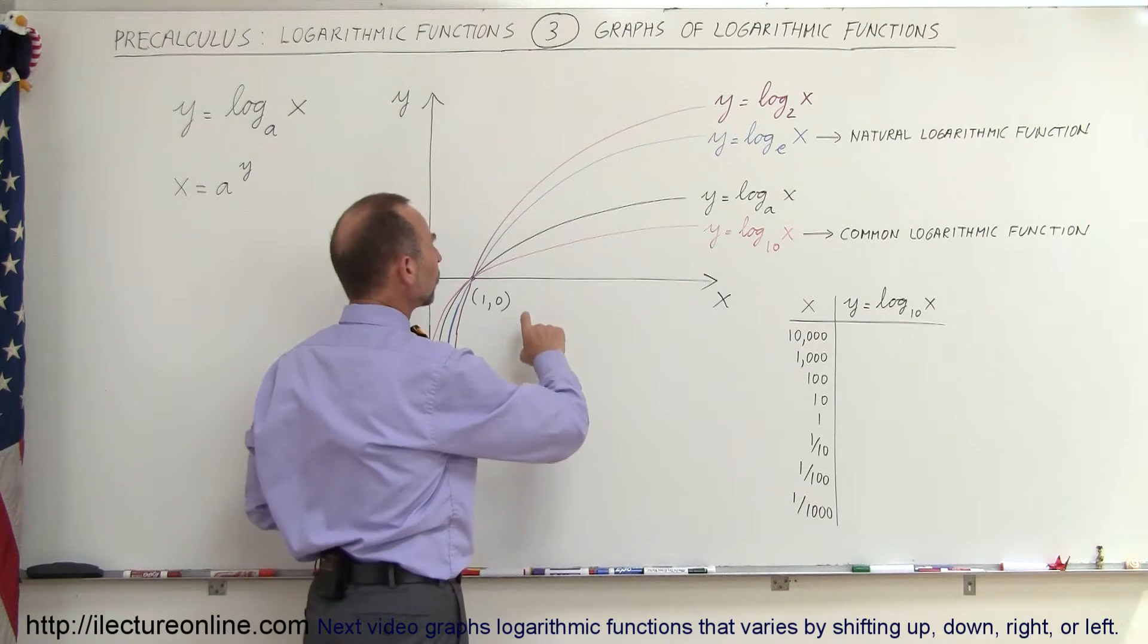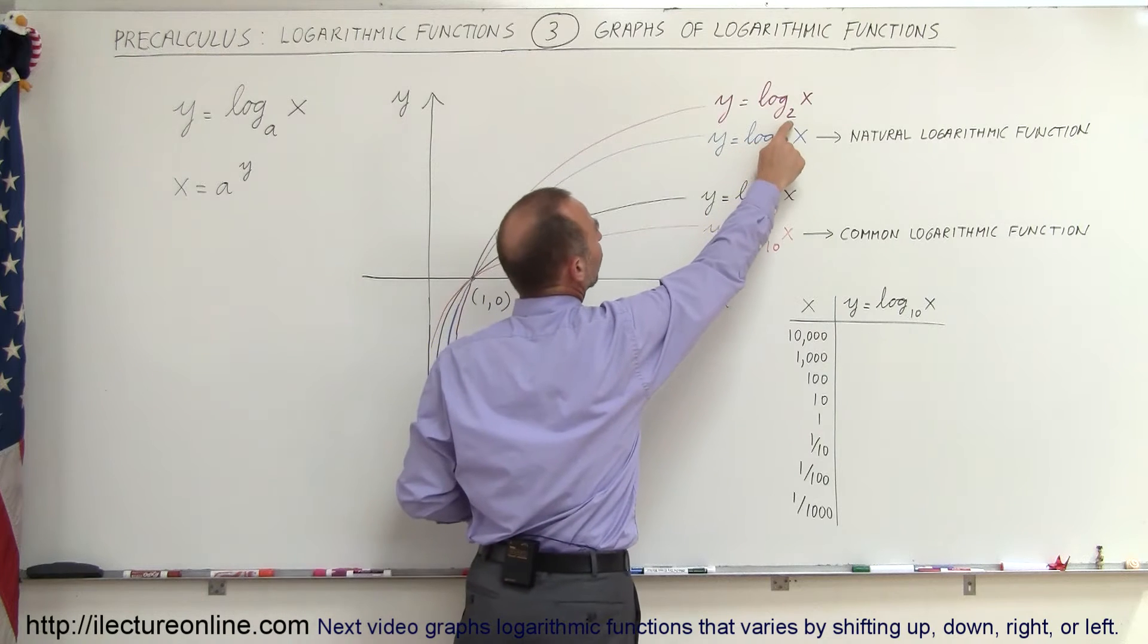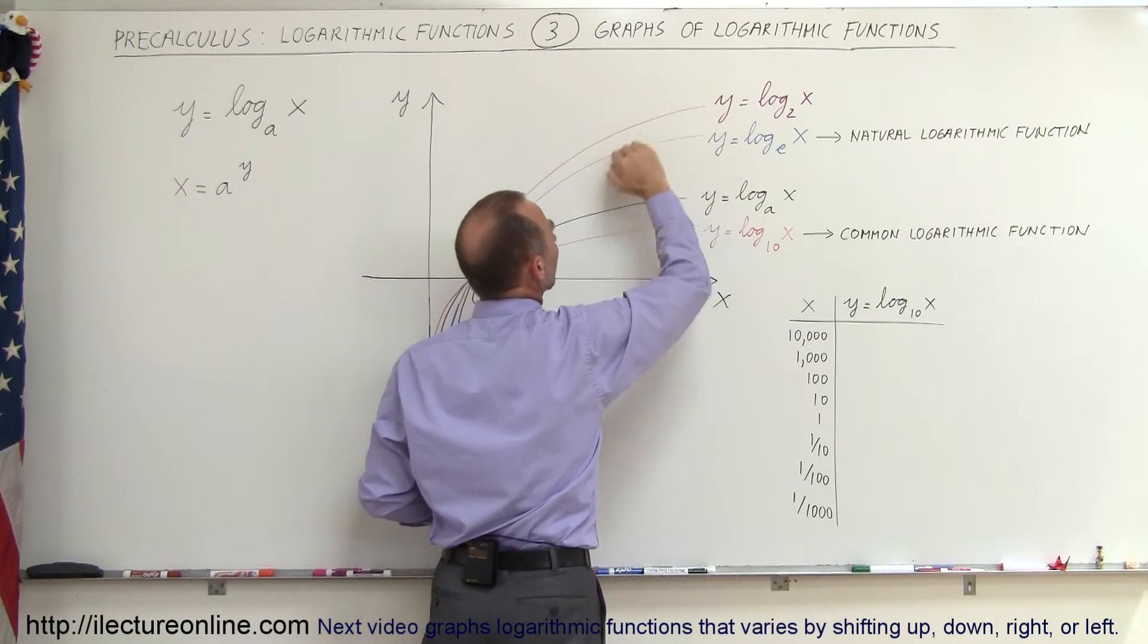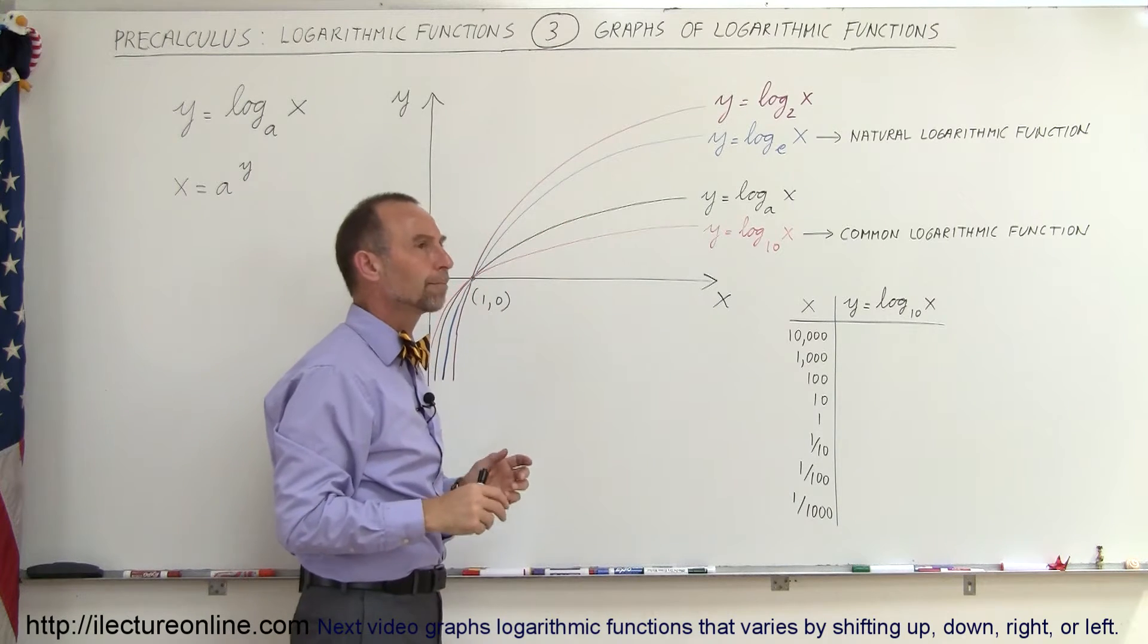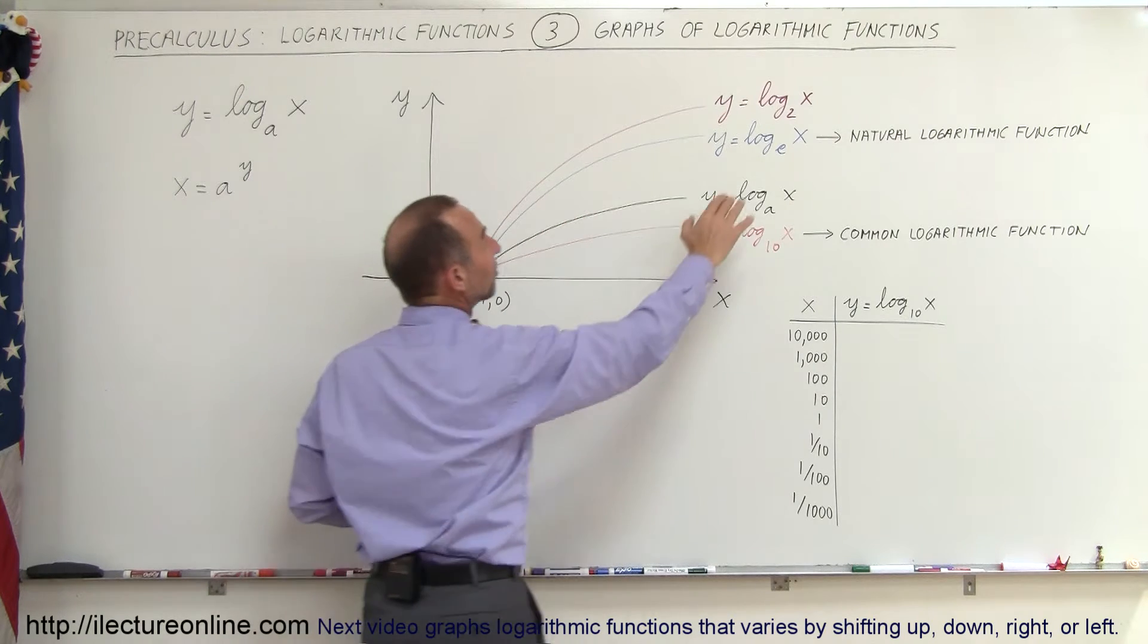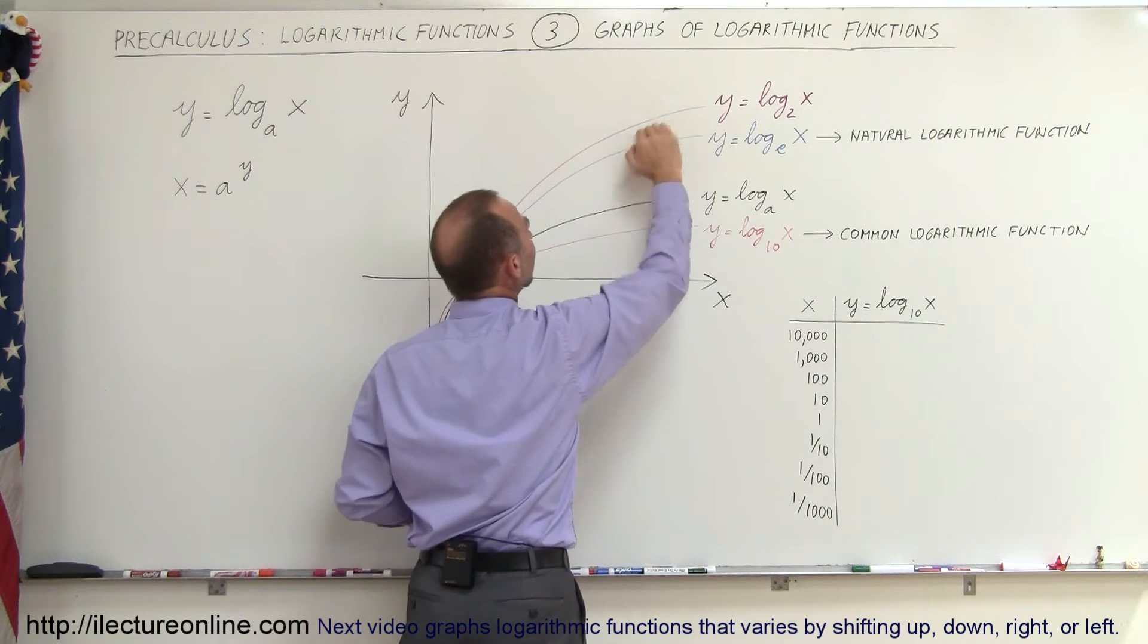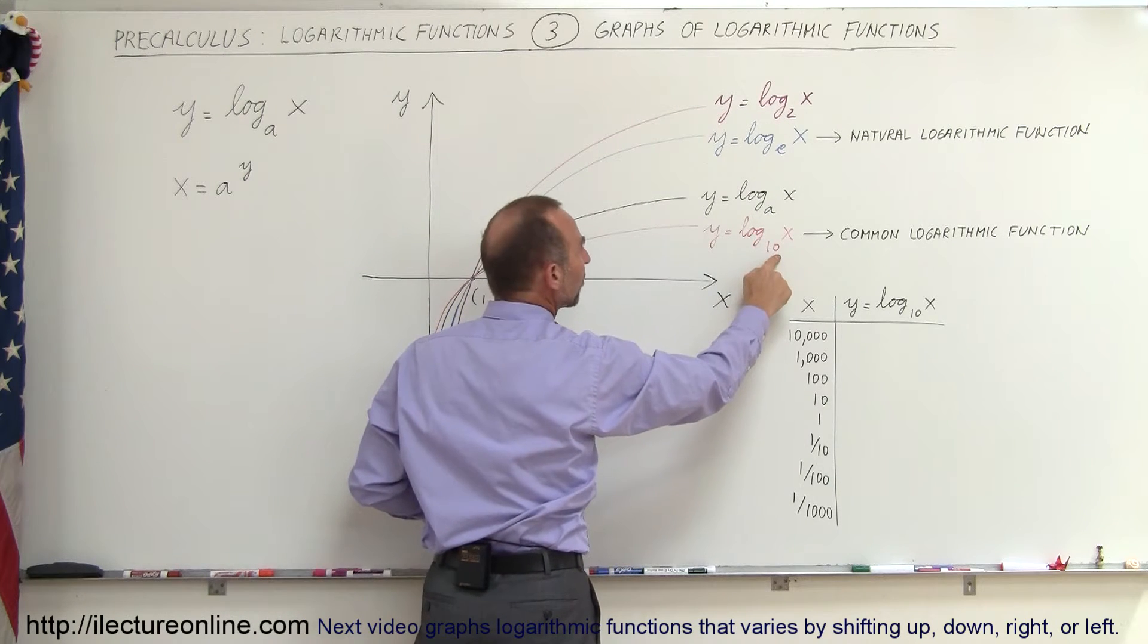Now, notice that if a becomes small, for example, base 2, then the function doesn't slope down as, or, I should say. So, notice, when the base is a small number, that the function rises more quickly than when the base is a large number.